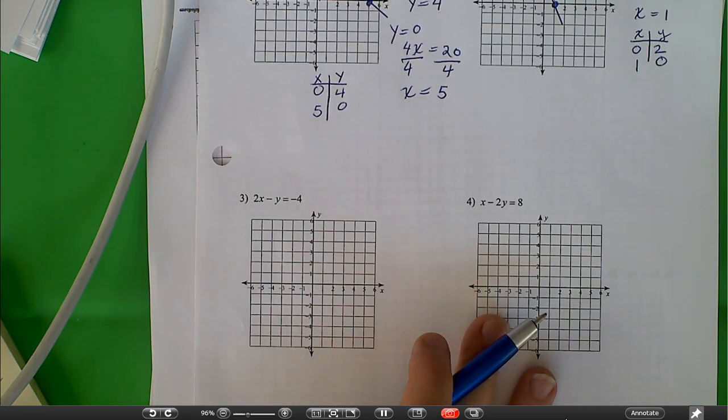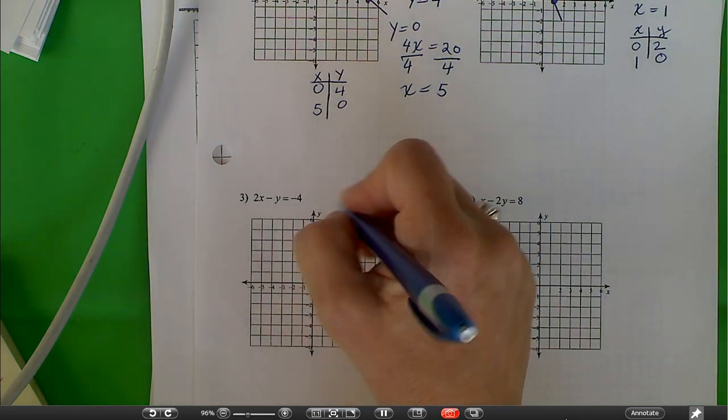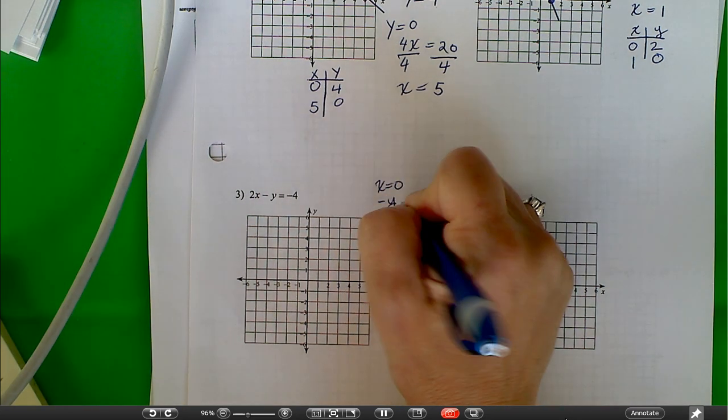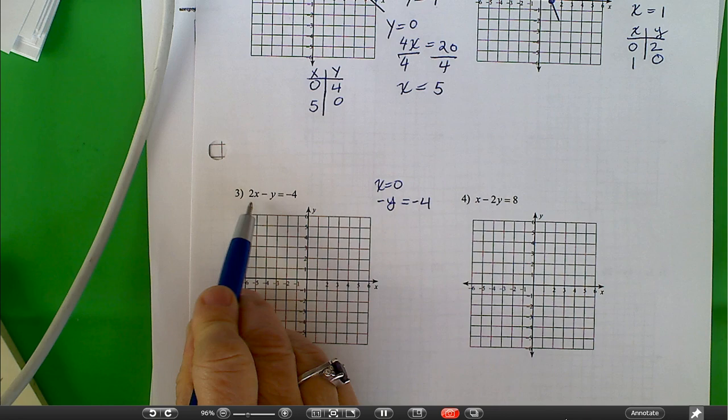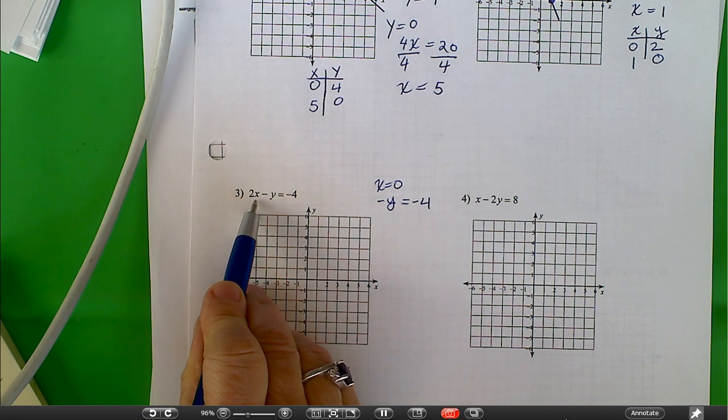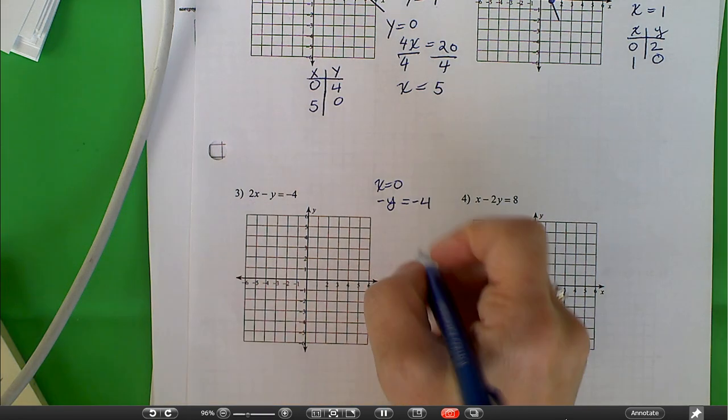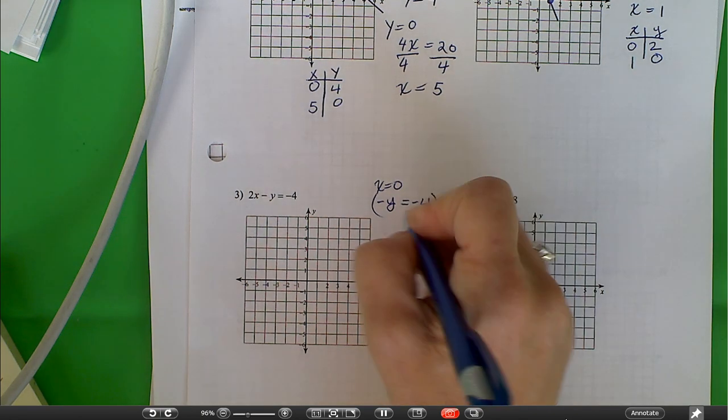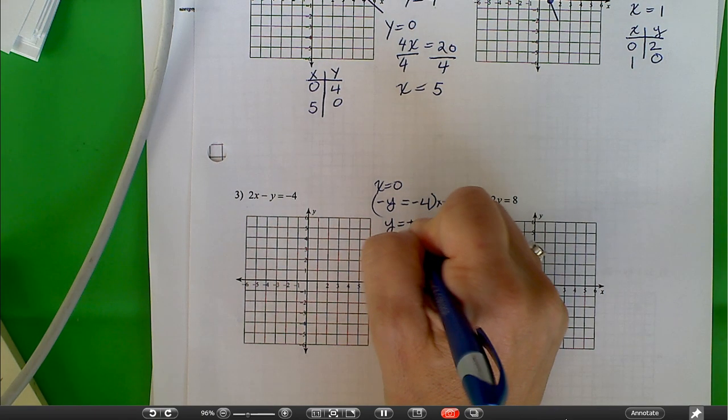Let's go on to question 3. Here again we have x is equal to 0. That means negative y is equal to negative 4 because 2x times 0 is 0. We're going to multiply both sides by negative 1, and I end up with y is equal to positive 4.